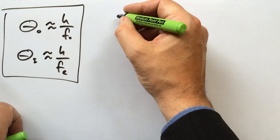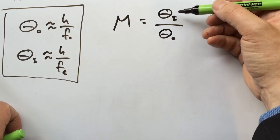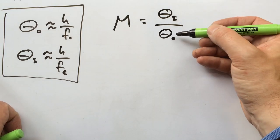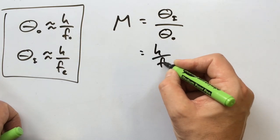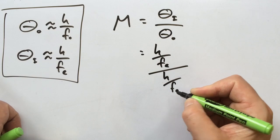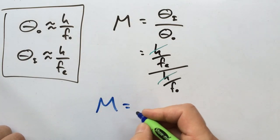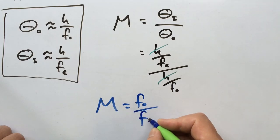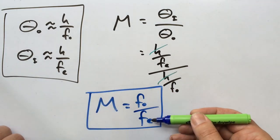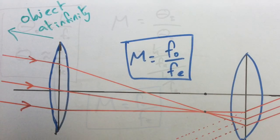Now the angular magnification for the telescope is just given by the ratio of these two quantities, theta_i divided by theta_o. In other words, how big the image appears to be compared to how big the object is. And this using our relationships is just equal to h over f_e divided by h over f_o. We can cancel the two h's and that leaves us with a very simple final equation. Our angular magnification M is just equal to f_o, the focal length of the objective lens, divided by f_e. And from this you can see the reason why the eyepiece needs to have a very small focal length compared to the objective lens.